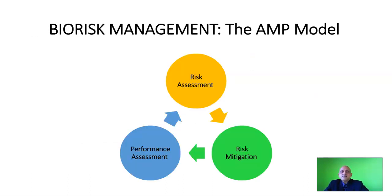In biorisk management, we follow the AMP model, which will form the basis for the rest of the lectures in this MOOC. The AMP model begins with risk Assessment (A), then risk Mitigation (M), and finally Performance assessment (P). This process is cyclical and continuously improved upon in order to mitigate risks.